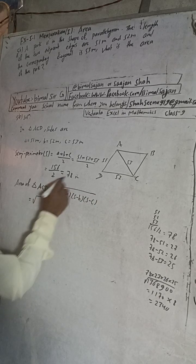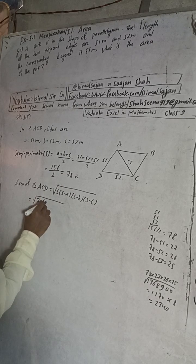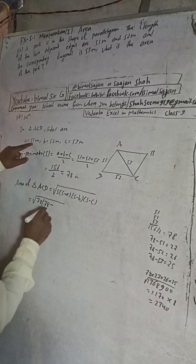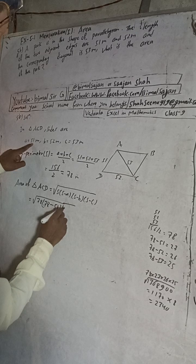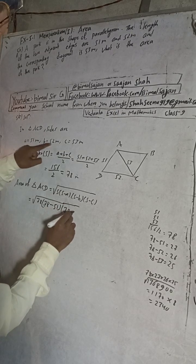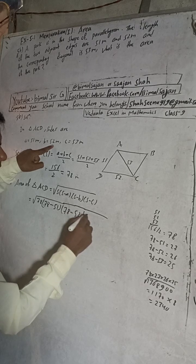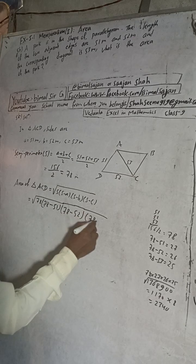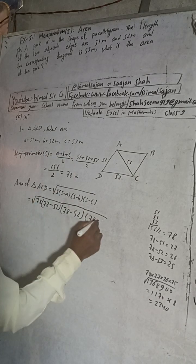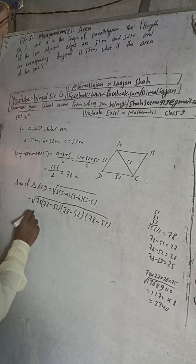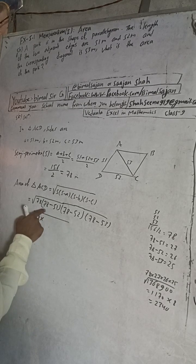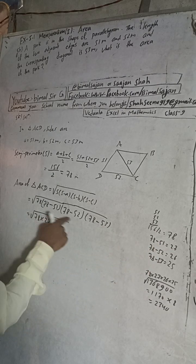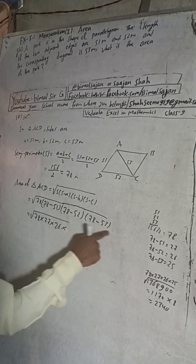So here S is 78, and S minus A means 78 minus A is 51, into S minus B means S is 78 minus B, 52, again S minus C, what is C? C is here 53.